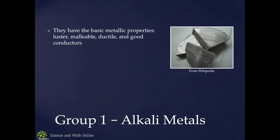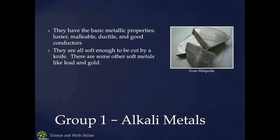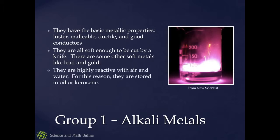Group one — alkali metals. They have the basic metallic properties even though they're soft. They're still shiny, still malleable, still ductile, still good conductors if you keep them in safe conditions. You can cut them with a butter knife. They're highly reactive — that's where the hydrogen catches on fire. So they're always stored under oil or kerosene to keep them from reacting with water or air.